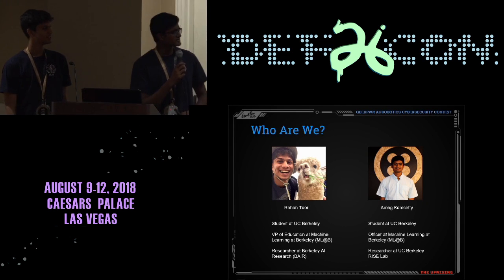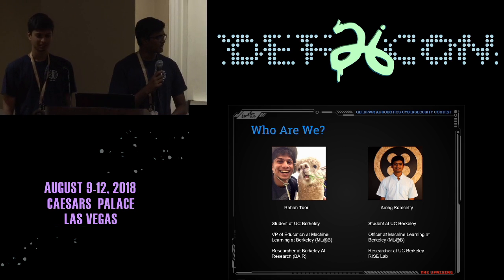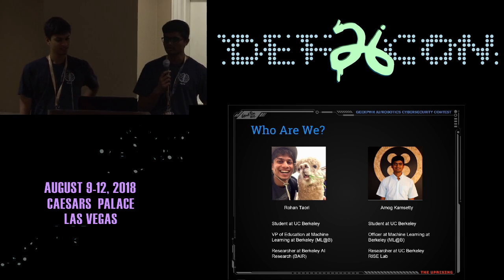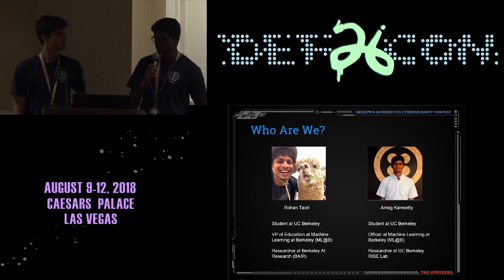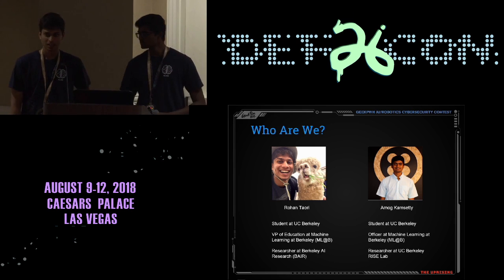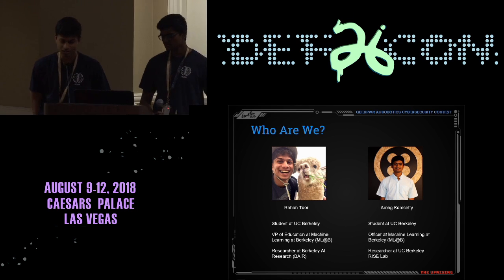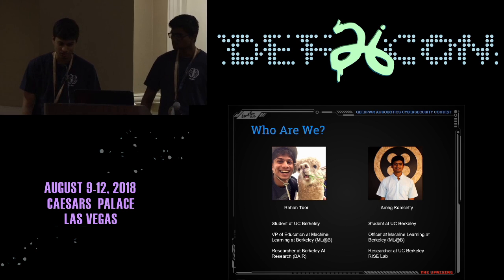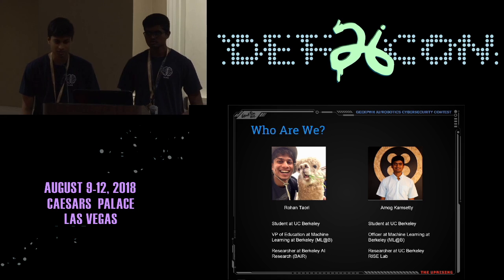A little bit about us. My name is Imog, I'm a student at UC Berkeley. I'm an officer at Machine Learning at Berkeley Organization, and I'm also a researcher at UC Berkeley RISE Lab. I'm Rohan, also a student at UC Berkeley. I'm the VP of Education at Machine Learning at Berkeley Organization, and I'm also a researcher at Berkeley AI Research, or BEAR.